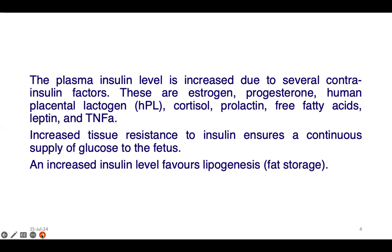Insulin secretion is increased, and plasma insulin level will increase due to several other factors such as estrogen, progesterone, human placental lactogen, cortisol, prolactin, free fatty acid, leptin and TNF-alpha. The increased tissue resistance to insulin ensures a continuous supply of glucose to the fetus. Even though tissue resistance is increased, glucose is not fully metabolized by the mother and can be transferred to the fetus.